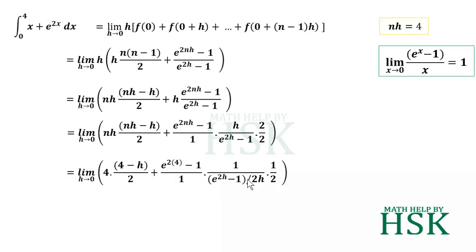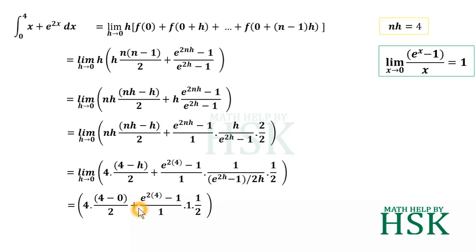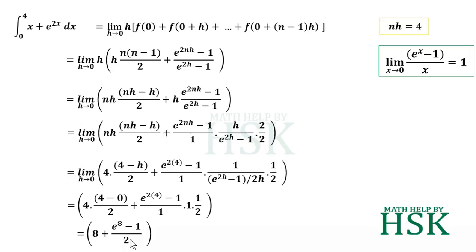Taking the limit as h→0 and substituting nh = 4, we get 4×(4-0)/2 + (e^(2×4) - 1)/1 × (1/2). This gives 16/2 + (e^8 - 1)/2, which equals 8 + (e^8 - 1)/2. Taking the LCM and combining: (16 + e^8 - 1)/2 = (e^8 + 15)/2, which is the required answer.